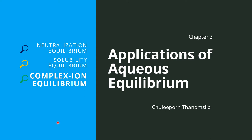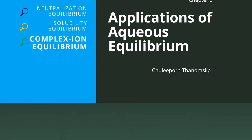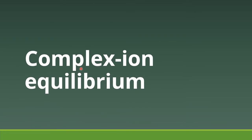We are on the last part, the third one of chapter 3. This is going to be about complex ion equilibrium — the equilibrium of the formation of complex ions. We're going to see the equilibrium between the metal ion that reacts with ligands to make the complex ion.